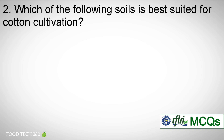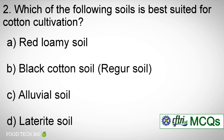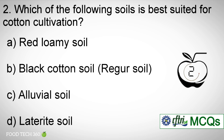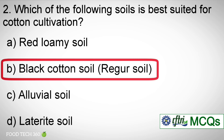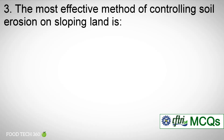Question number two: Which of the following soils is best suited for cotton cultivation? Options: a) Red loamy soil. b) Black cotton soil. c) Alluvial soil. d) Laterite soil. Correct answer: b) Black cotton soil.